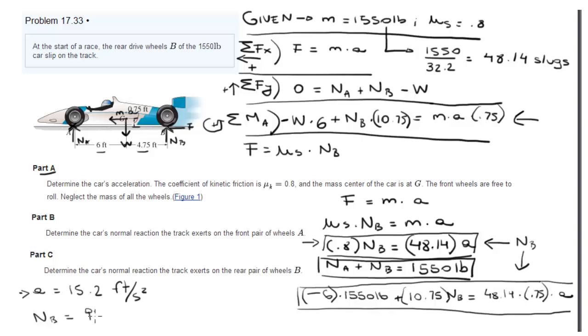Then you plug this one into this one and you get that the normal at A is going to equal 633.7 pounds. This is again with my numbers.